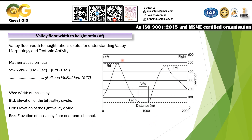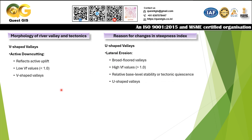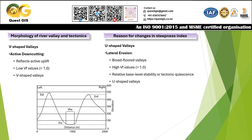When we talk about the morphology of a river valley and its relation to tectonics: if the valley is V-shaped, it reflects active downcutting, which in turn reflects active uplift and low Vf values — because the width of the valley floor will be very small. U-shaped valleys represent lateral erosion and broad, flat-floored valleys, yielding high Vf values greater than 1, which indicate relative base-level stability or tectonic quiescence.